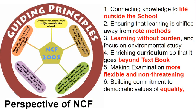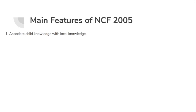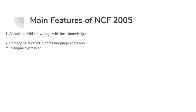Now let's look in detail at the topics NCF has highlighted — these are very important from an exam point of view, as direct questions are made from here. The first main feature is: associate child knowledge with local knowledge. For example, if we are teaching photosynthesis from a book, we have given bookish knowledge, but if the child doesn't know to keep a plant in sunlight for photosynthesis to occur, then there is no benefit. Whatever knowledge you give should be associated with local knowledge — whether you're teaching maps, geography, history, anything.